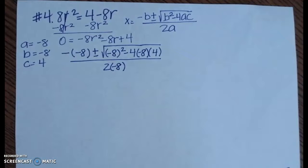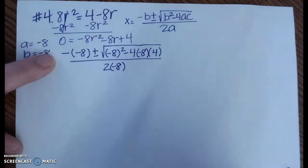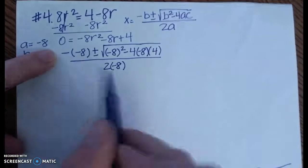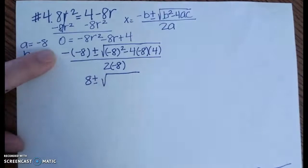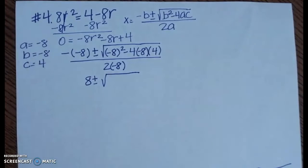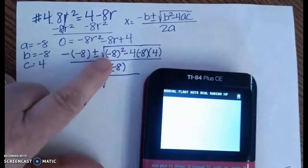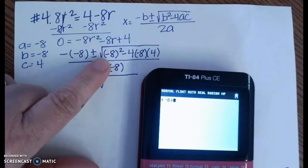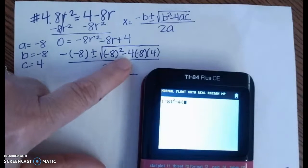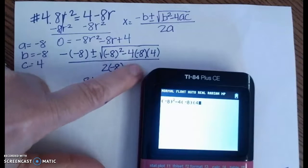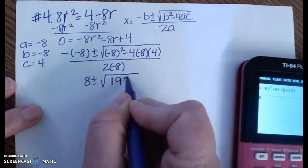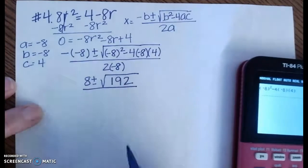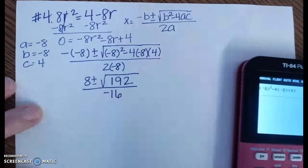Once everything is plugged in, our next step is to start simplifying. So my very first thing, I've got negative negative 8. Well, that's a positive 8. So I'm going to put positive 8 here. Then we have plus or minus a square root. I want to find what my discriminant is. So I want to take my calculator, and I'm going to put in what I have here for my discriminant. Parentheses: negative 8 squared minus 4 times negative 8 times 4. And that's going to give me 192. So my discriminant is 192. That's a positive number. That means it's two real solutions.